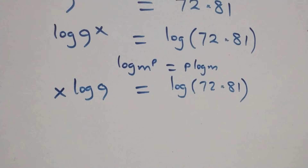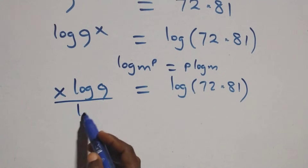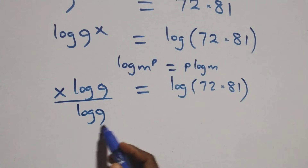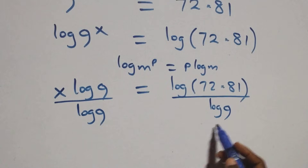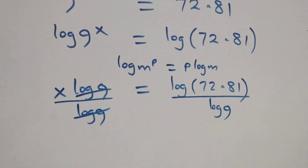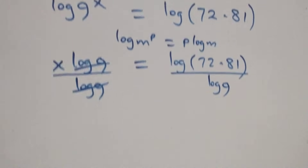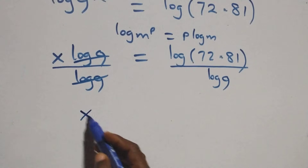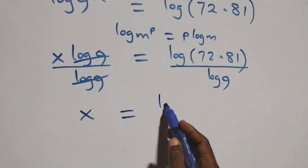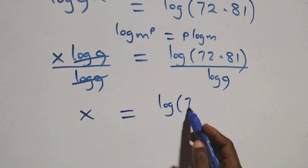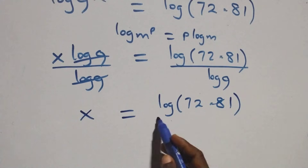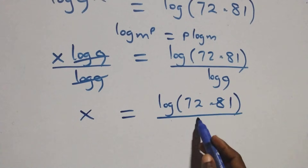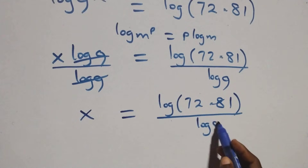From here, divide both sides by log 9. Log 9 cancels each other, and this becomes x equals log(72 times 81) over log 9.